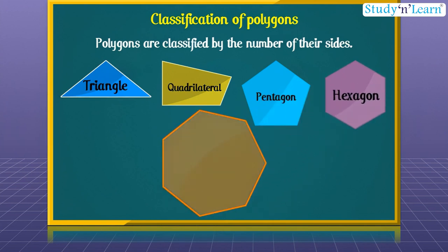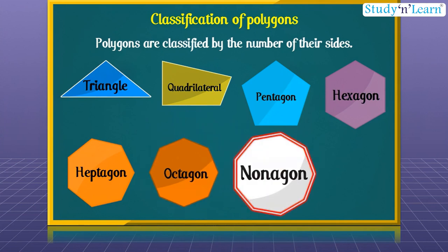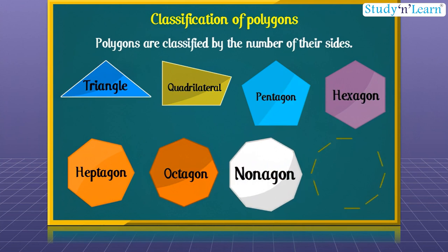A polygon with seven sides is called a heptagon. A polygon with eight sides is called an octagon. A polygon with nine sides is called a nonagon. This is how we can classify polygons.